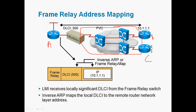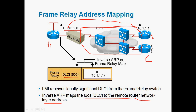So in frame relay, DLCI values are used. Frame Inverse ARP means using a DLCI value we can find the IP address. Frame relay ARP means using an IP address we can find out the DLCI value. For example, Router A uses DLCI 500, and using that DLCI 500 value we can find out the IP address 10.1.1.1 — that is Inverse ARP. So Inverse ARP maps the local DLCI to the remote router's network layer address.